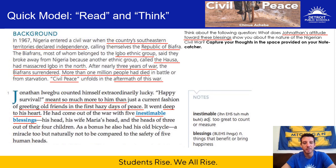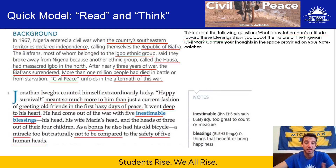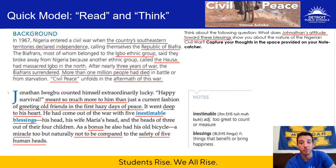As a bonus, he also had his old bicycle — a miracle too, but naturally not to be compared to the safety of five human heads. He used the words bonus and miracle when talking about his bike, which is a material possession. He does say it's not as significant as the survival of his family. But I underlined it because later on you remember the significance of the bicycle. The fact that he calls it a miracle is a really positive word to use after something so devastating as a war, and it speaks to his general sentiments and attitude about life after the war.